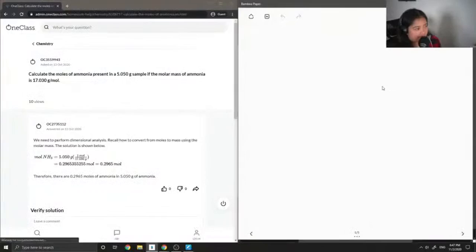Now let's move on to question number five. It's another stoichiometry-based question. Calculate the moles of ammonia present in a 5.05 gram sample if the molar mass of ammonia is 17.03 grams per mole.